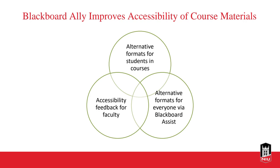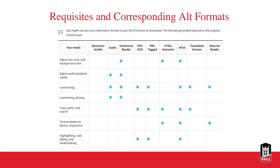Here's a chart from Blackboard/Anthology about the needs you might have for alternative formats and what the appropriate alternative formats are for those needs. If you need to adjust text font or background color, then Immersive Reader, HTML, or EPUB would be appropriate. For adjusting audio playback speed: Immersive Reader and Audio, which is an MP3 file. If you're commuting or driving: there are different options. For copy, paste, and search: HTML. For format that adapts to the device: Beeline Reader and HTML. For highlighting, note-taking, and bookmarking capabilities: PDFs and EPUB.